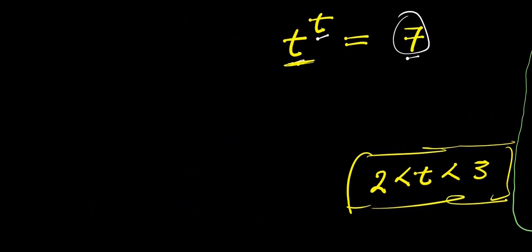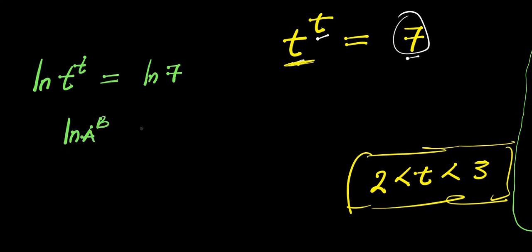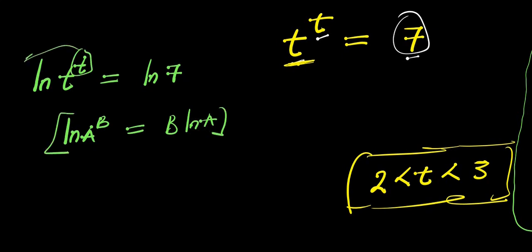So, we are going to make use of natural log. We have natural log of t to the power of t, and this equals natural log of 7. Now, if you have natural log of a to the power of b, this equals b times natural log of a. So that means the t here will come in front, and we have t times ln(t), and this equals ln(7).